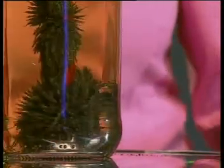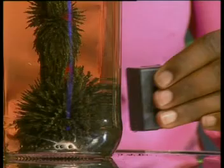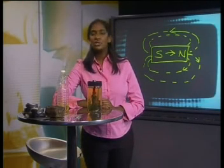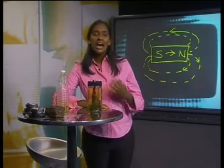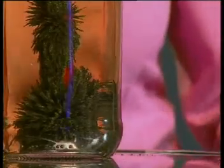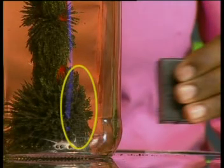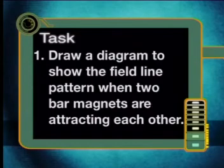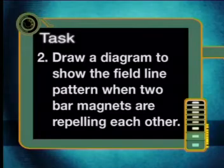Now watch what happens to the iron filings when another magnet is brought close to the outside of the glass container. Here the poles of the magnets are opposite, and there is a strong force of attraction between these magnets. Notice that the iron filings are arranged in straight lines between these opposite poles — there is clearly a strong magnetic force field between them. But it is quite a different picture when I change the pole of the magnet outside the glass container so that the poles of the magnets are the same. The iron filings are forming curved lines that bend away from each other, and the magnets are repelling each other. For your task today, I would like you to draw two diagrams: one showing the field line pattern when two bar magnets are attracting each other, and one showing the field line pattern when two bar magnets are repelling each other.